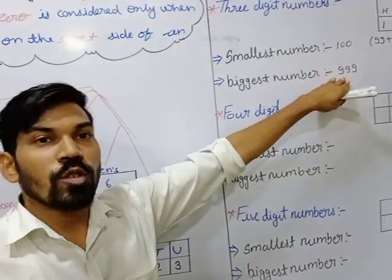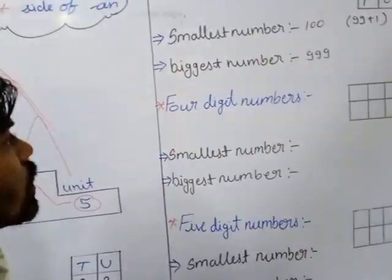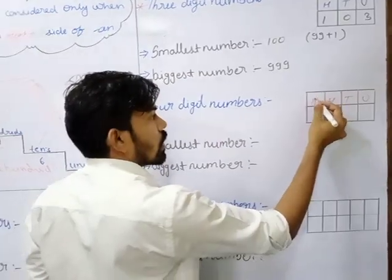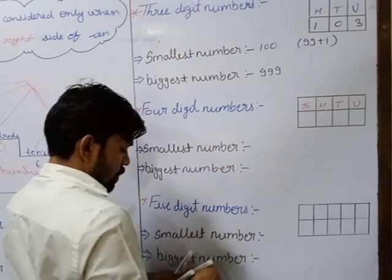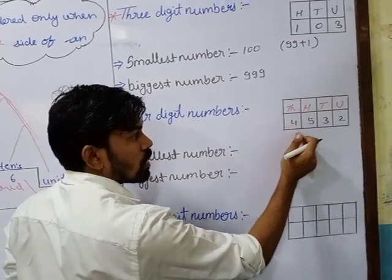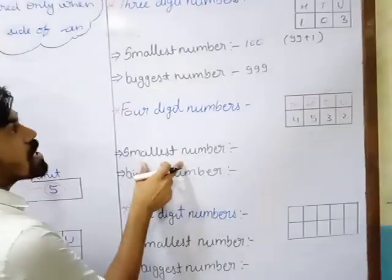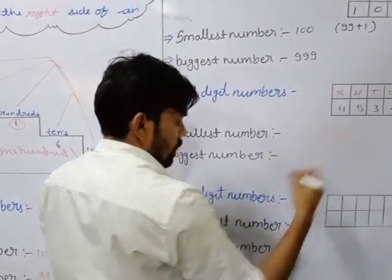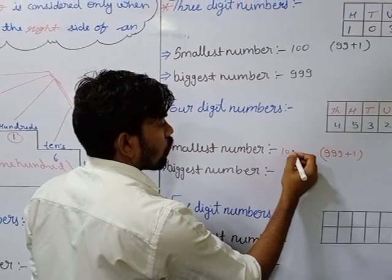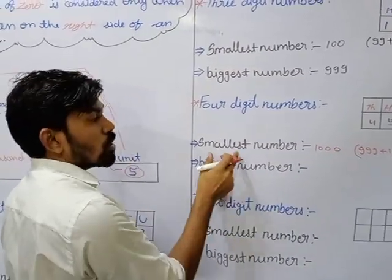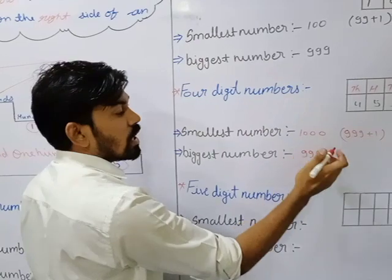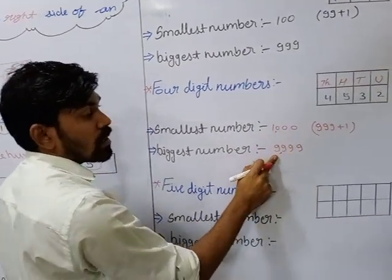In the 4-digit numbers, we have units, tens, hundreds, thousands — 4 places. Take the number 4532: we started at 1000s. The smallest 4-digit number: 999 plus 1 becomes 1000. The biggest 4-digit number — as in 3-digit we have three 9s, in 4-digit we have four 9s — is 9,999.